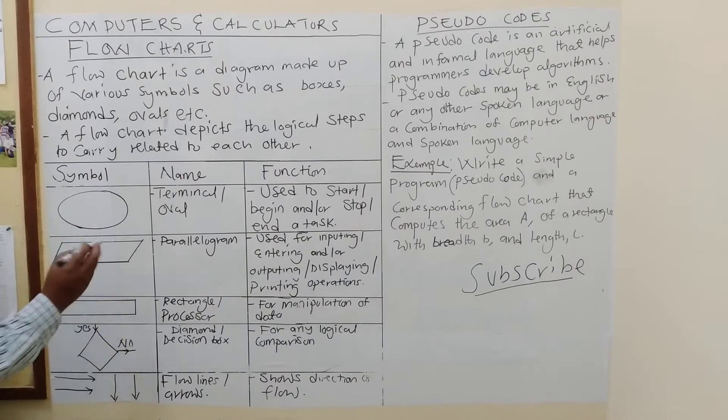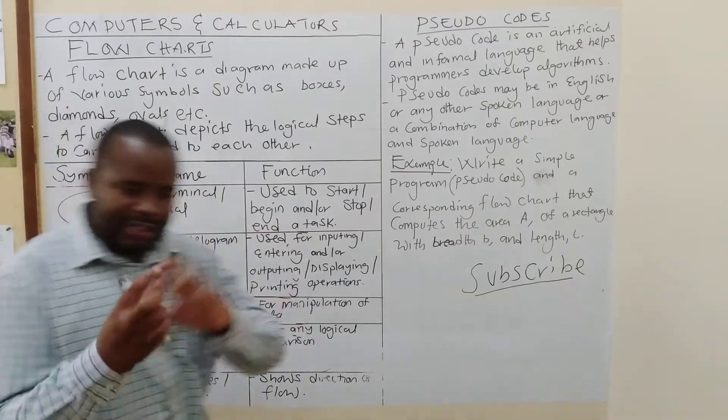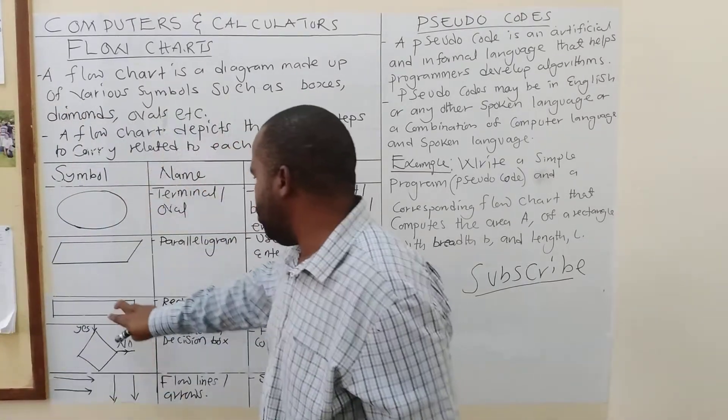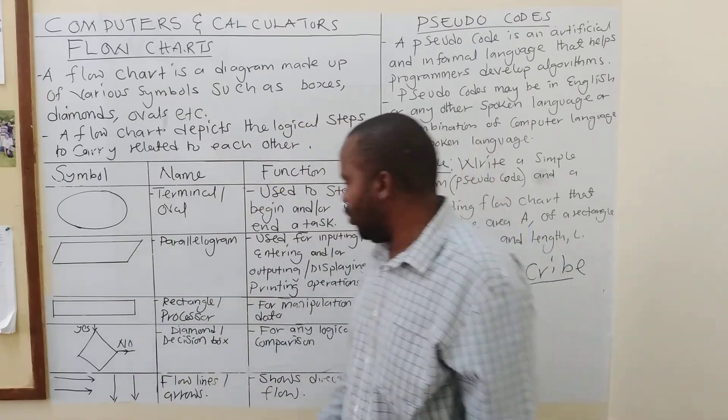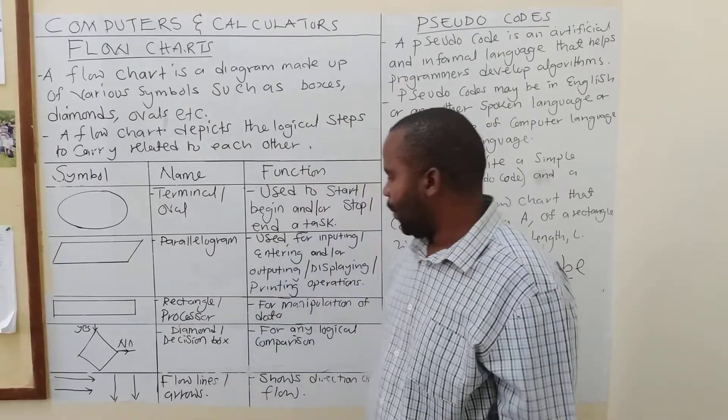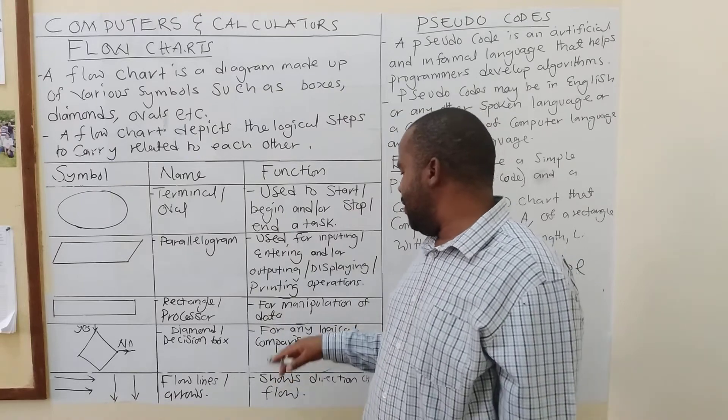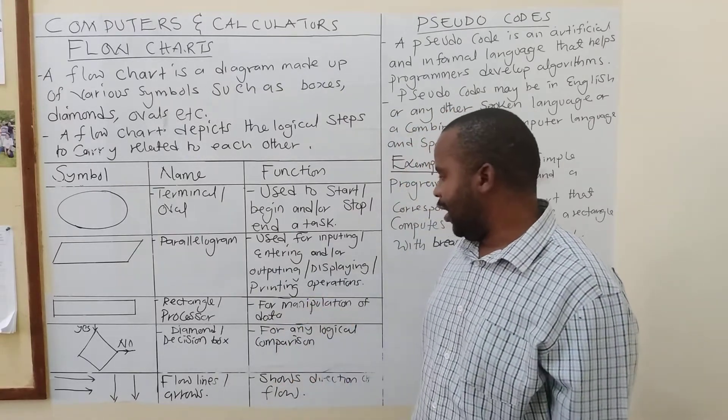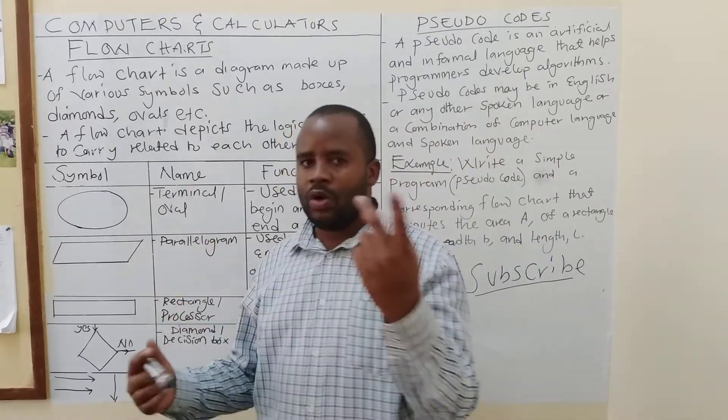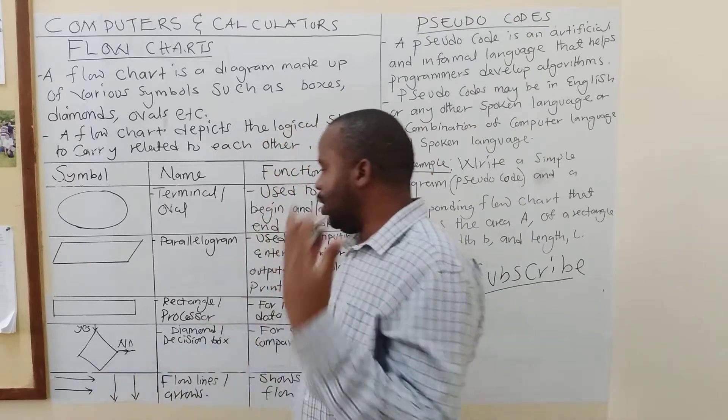After that, you will deal with the rectangle or what we call a processor. This one, it is used to manipulate data. If you want to process data, you are going to use this. And the next one, the next symbol is what we call a diamond, a diamond or what we call a decision box. By decision, again, it means you are going to make logical comparisons. So, it is a decision box that has got one point of entry and one point of output.